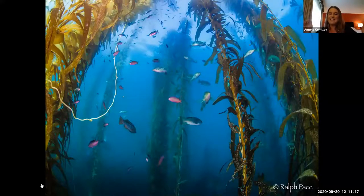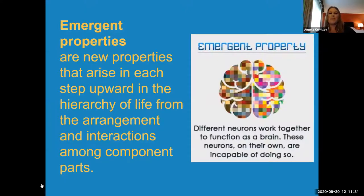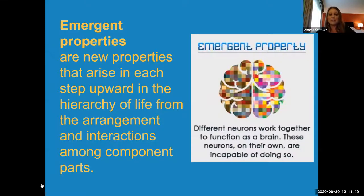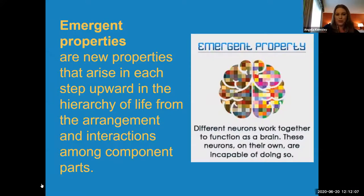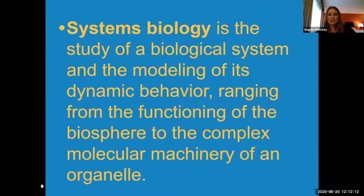Life is just amazing — there's so many different types, and all of these different interactions are going to be really crucial to the study of life. At each of those different levels, there are what we call emergent properties — new properties that arise in each step upward in the hierarchy from the arrangement and interactions among component parts. So emergent properties are basically new properties at one level of hierarchy that you didn't see in the previous level. Systems biology is the study of a biological system and the modeling of its dynamic behavior, ranging from the functioning of the biosphere to the complex molecular machinery of an organelle — basically the study of how all of these different things work together.